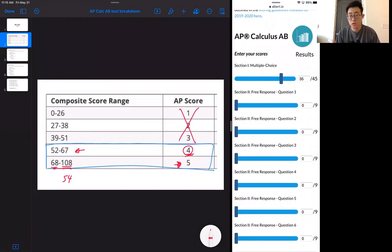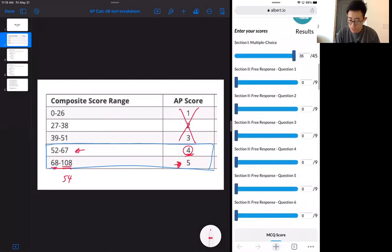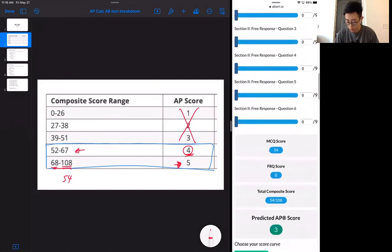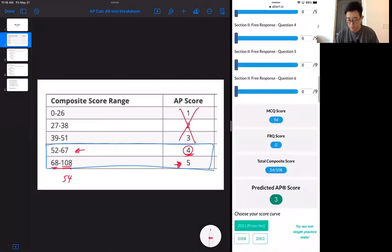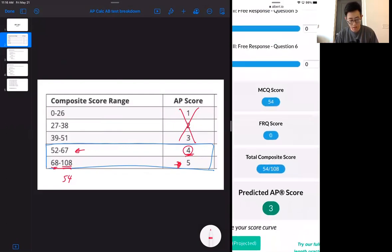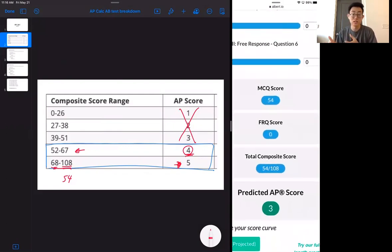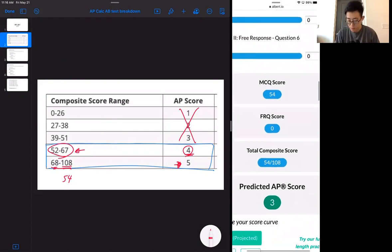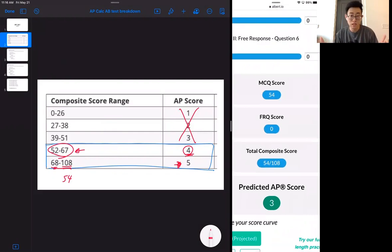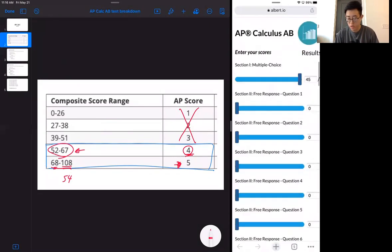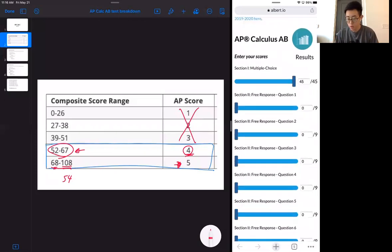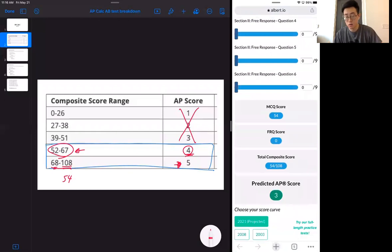The first part is the multiple choice, and they will give you 45 questions in total, and you will have six free response questions. Let's say you ace the first multiple choice section and get 45 out of 45, you already end up with a 3. The predicted AP score here would be a 3, and that's a total composite score of 54 out of 108. Now of course this doesn't coincide with what the chart shows because the chart says if I get a 54, I should be ending up with a score of 4. If on the multiple choice section you get every question right, you're pretty much guaranteed to have a 3 or 4 depending on how the curve is going to roll.